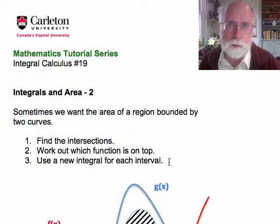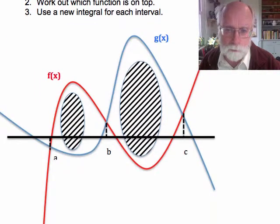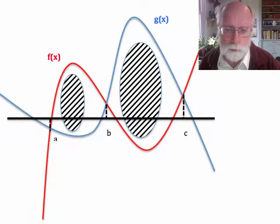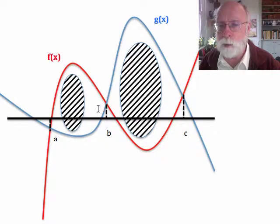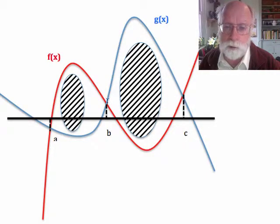And then we use a new integral, a different integral for each of the intervals where the role of top function and bottom function changes. Let's illustrate that with this particular set of curves. Here we have a red curve f of x and a blue curve g of x. I've shaded the area that we're interested in. Between a and b, f of x is the top function and g of x is the bottom function. Between b and c the roles are reversed so we have g of x on top and we have f of x on the bottom.